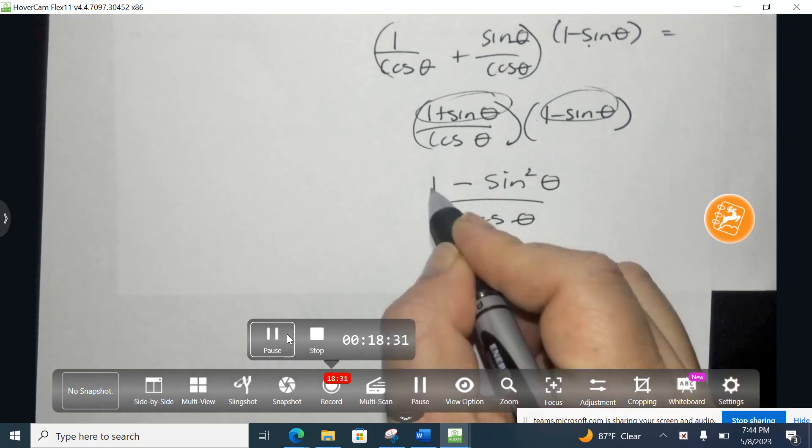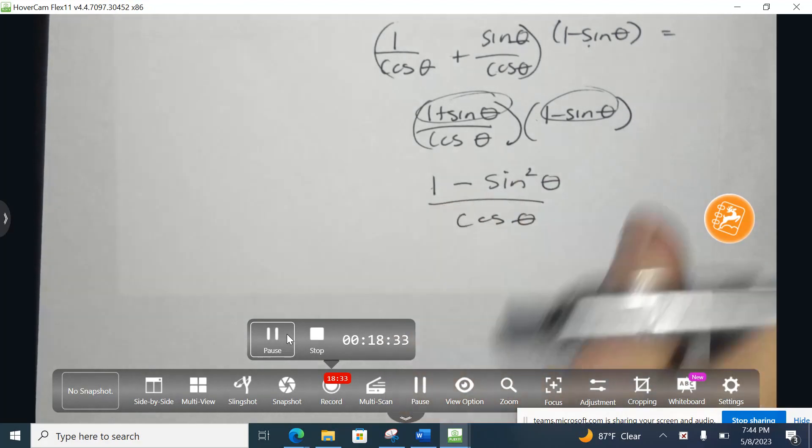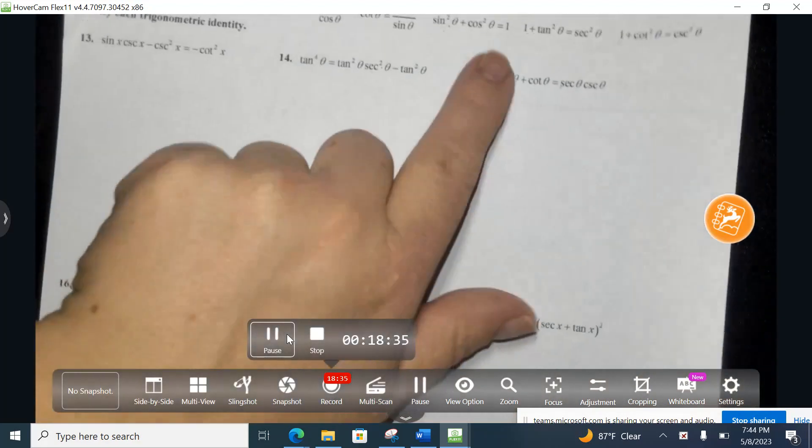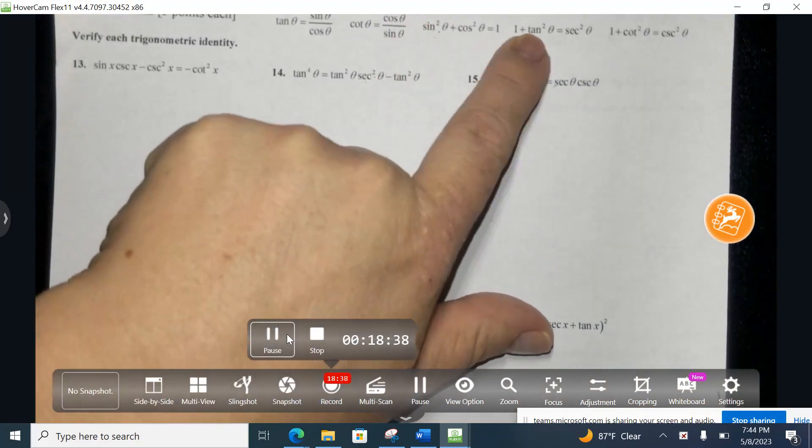On the bottom, I have cosine. Now, I know the trig identity. If I take 1 and I move the sine over, so it's 1 minus sine squared, it would be equal to cosine squared.